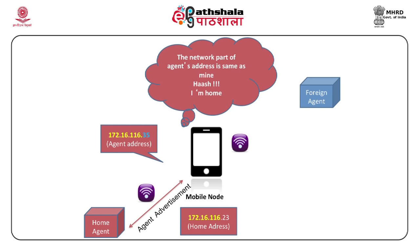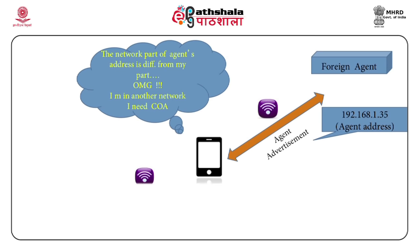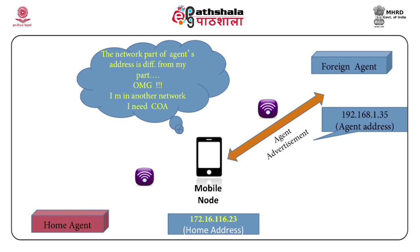The IP address consists of two parts: the network portion and the host portion. The address part contains the address of the agent who has advertised the message. The mobile node smartly compares the network part of its own address with the network part of the agent's address. If both network parts match, the mobile node understands it is in the home network and does not have to worry. But if the network parts do not match, it understands that it is in the foreign network.